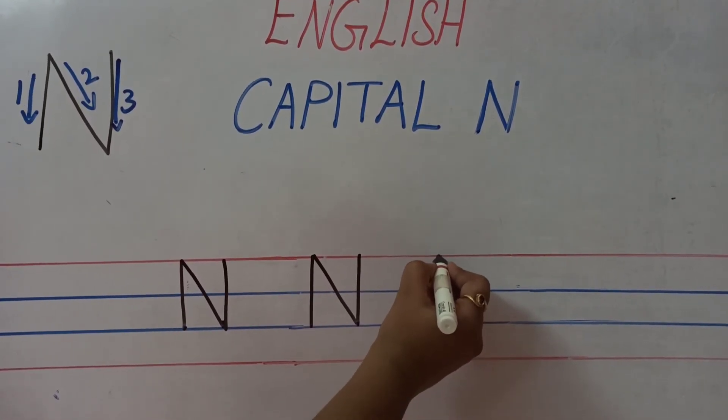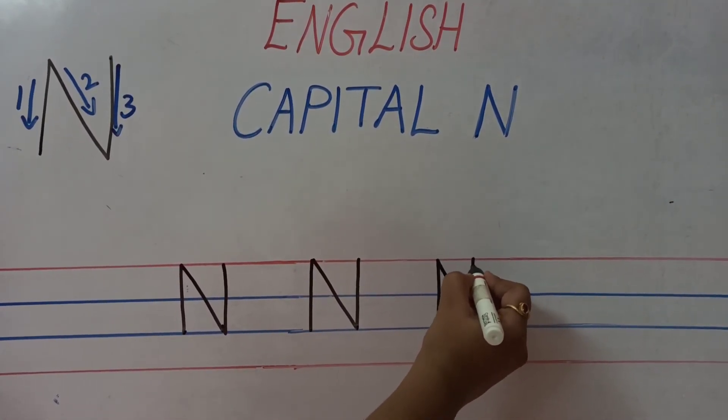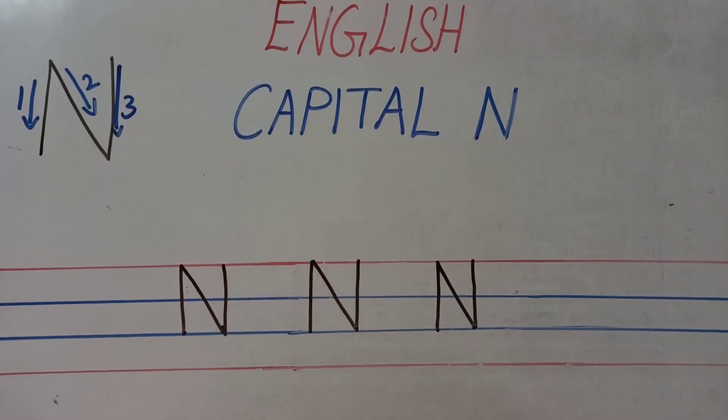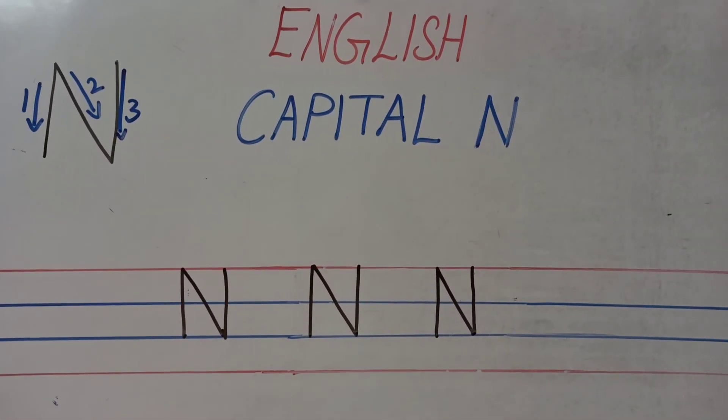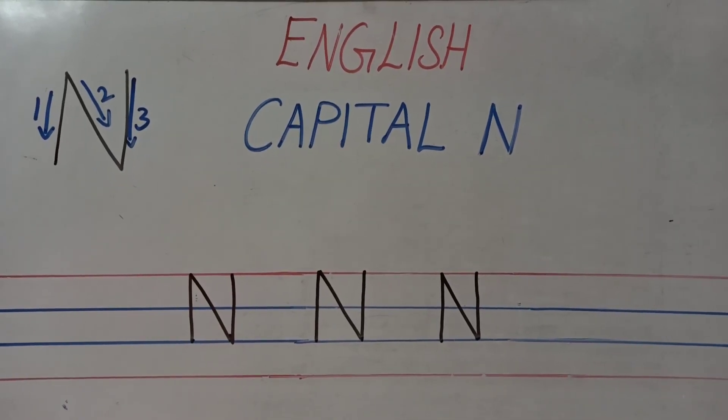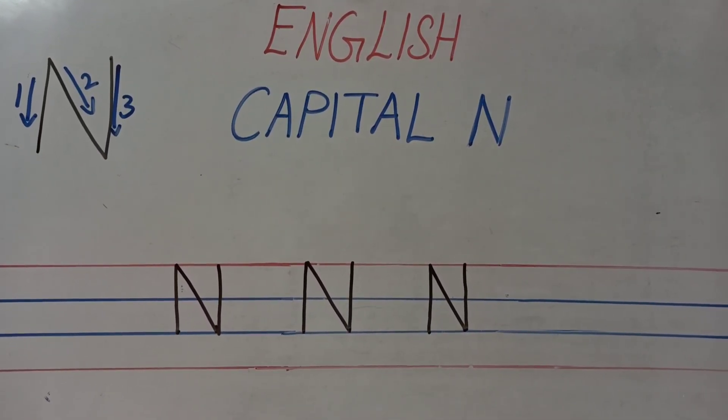Standing, slanting and standing line. This is called capital N. Same way write in your 4 lines notebook children. Have a nice day. Thank you.